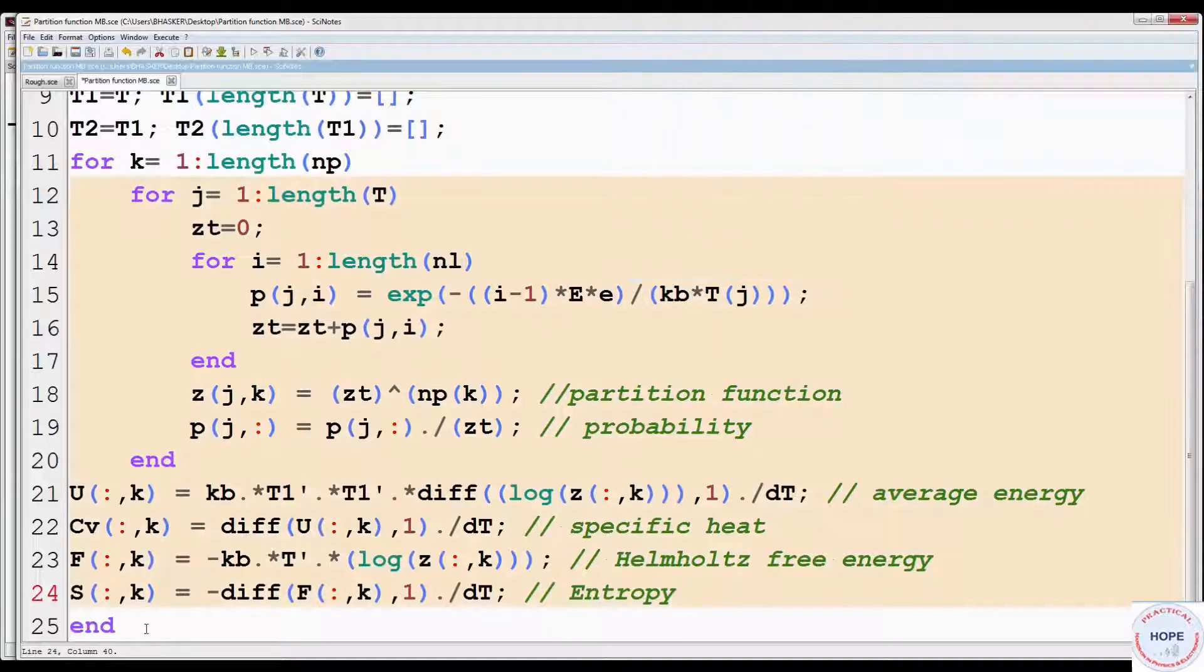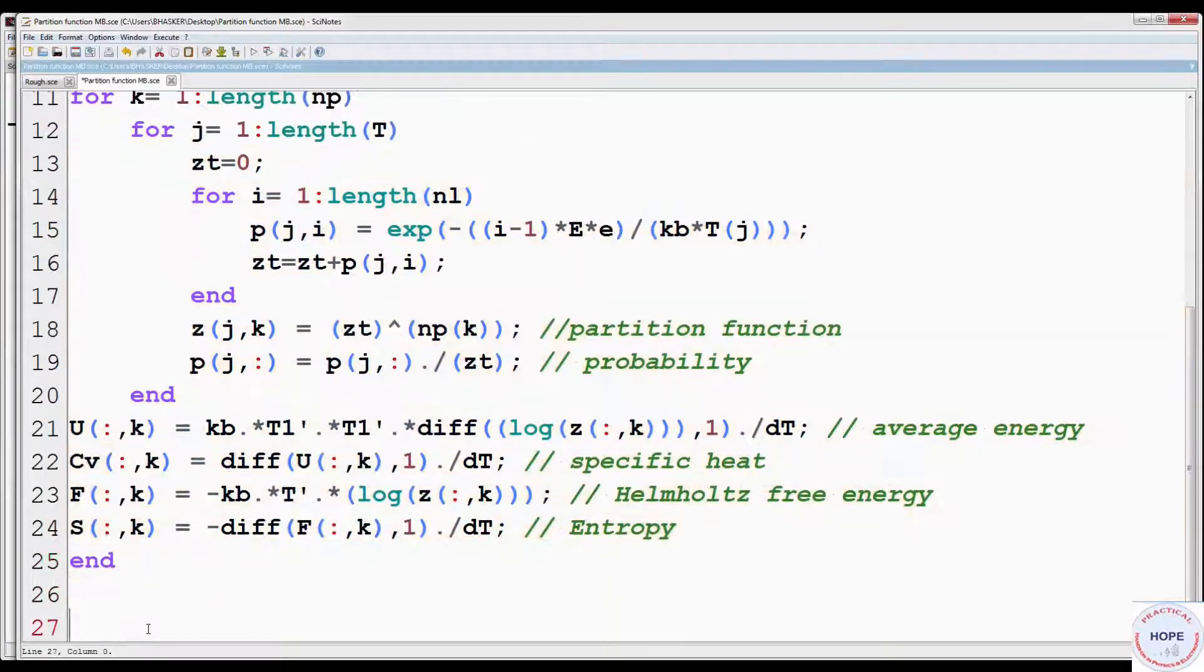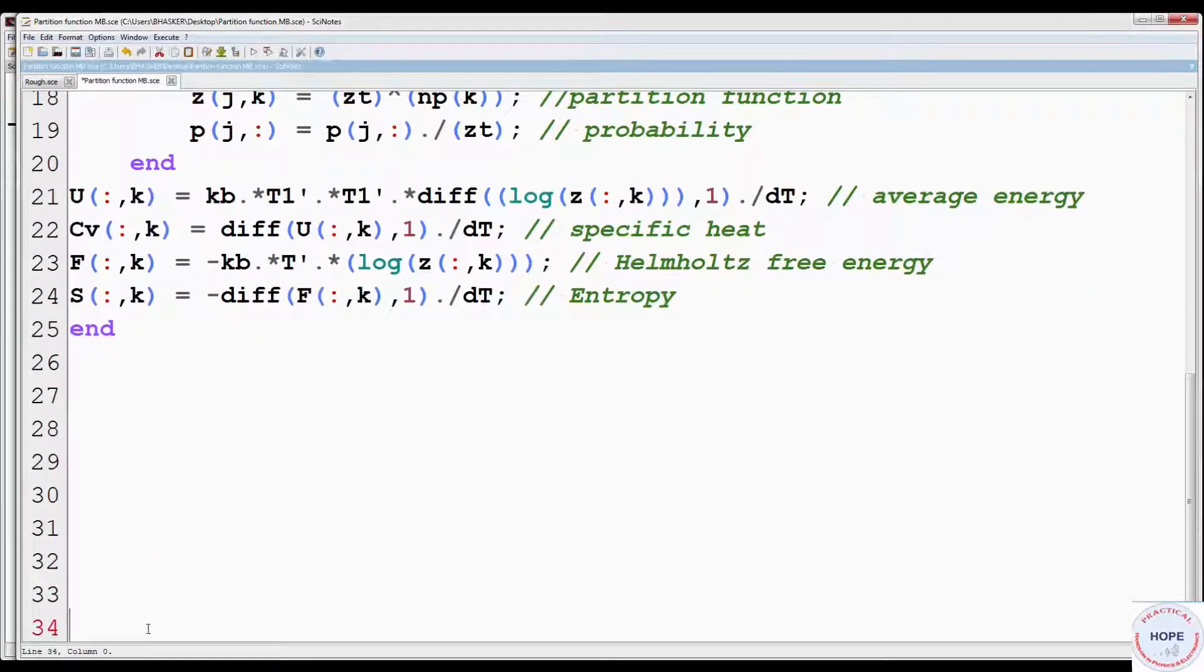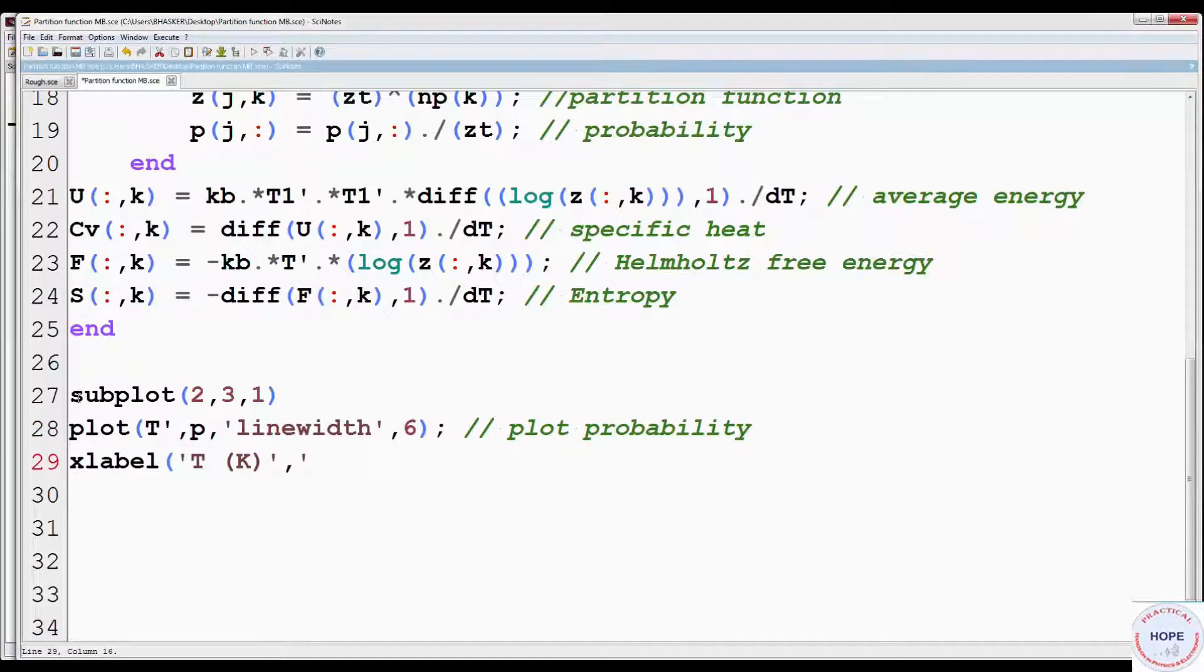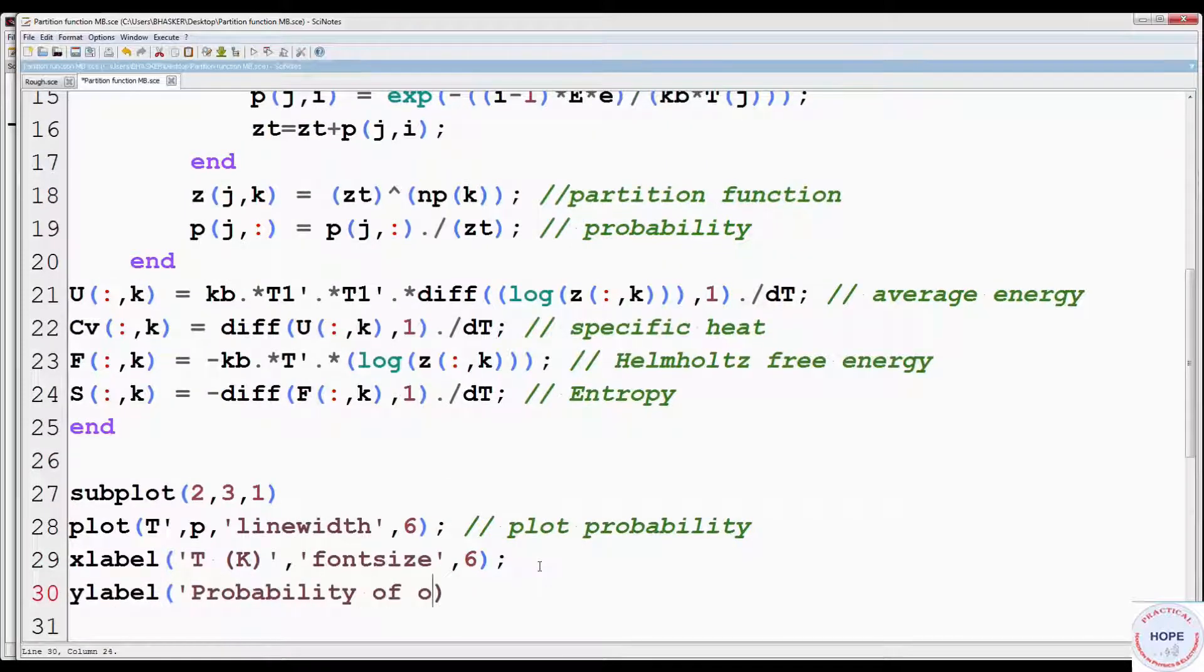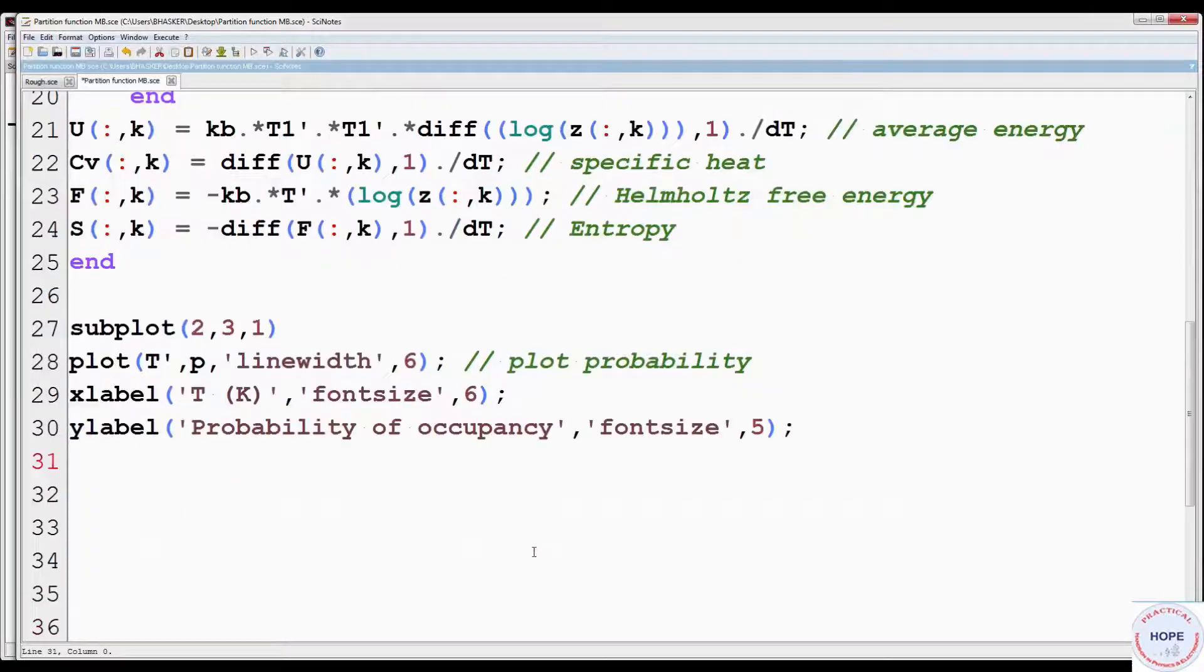Now we have to plot partition function, probability, and the 4 thermodynamical variables that we have evaluated. Use subplot to divide the graphic window to 2 rows and 3 columns. First plot probability, line width 6. X label T Kelvin with font size 6, Y label probability of occupancy font size 5. Set different energy levels 0, 1, 2 as legends.